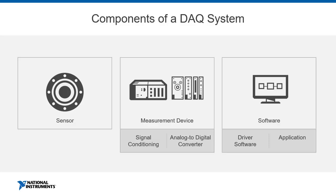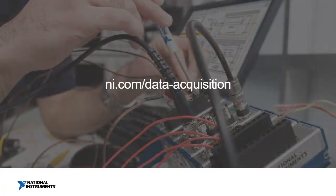That brings us to the end of the introduction to data acquisition terminology. We learned about different types of sensors used to acquire physical measurements, and the considerations needed when acquiring a signal — including signal conditioning and the analog-to-digital converter inside your DAQ device. We then learned about software, how driver software provides maximum flexibility, and the difference between configuration-based software and programming environments. I hope this serves as a useful introduction to data acquisition. To learn more, visit ni.com/data-acquisition. Thank you so much for your attention, and good luck with your next data acquisition application.